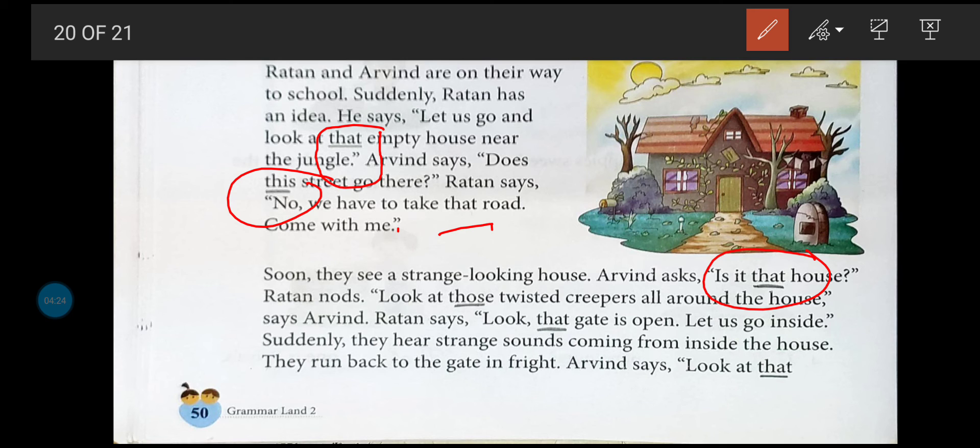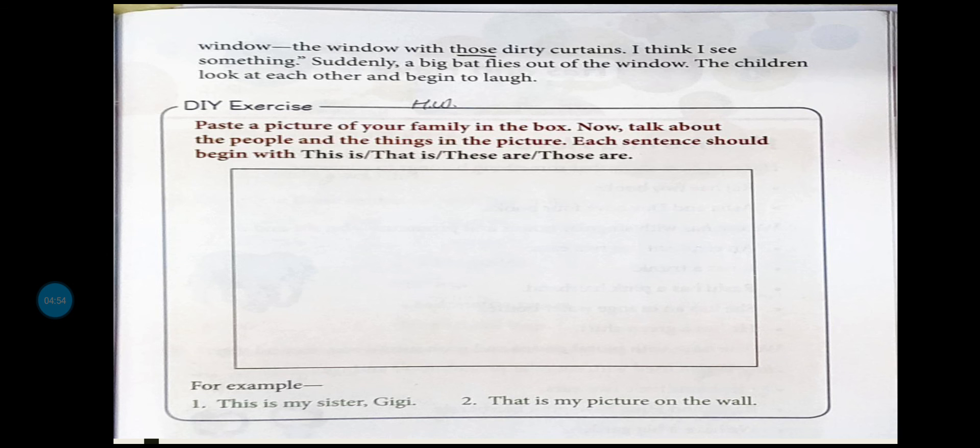Soon they see a strange-looking house. Arvind asks, 'Is that house...?' यहाँ पर that के नीचे underline करेंगे। Ratan nods. 'Look at those twisted creepers all around the house,' says Arvind. Ratan says, 'Look that gate is open. Let us go inside.' Suddenly they hear strange sounds coming from inside the house. They run back to the gate in fright. Arvind says, 'Look at that...' यहाँ पर teacher ने circles करके बताए हैं, वहाँ पर आप लोगों को underline करना है। आगे देख लेते हैं - window, the window with those dirty curtains.